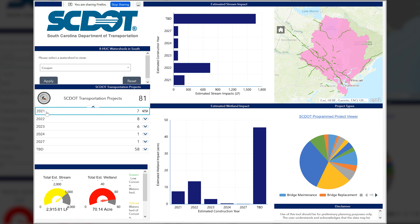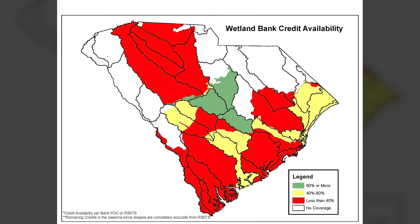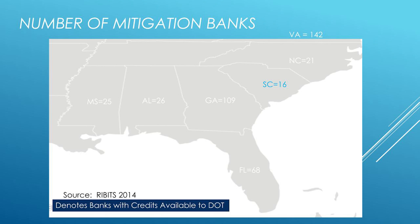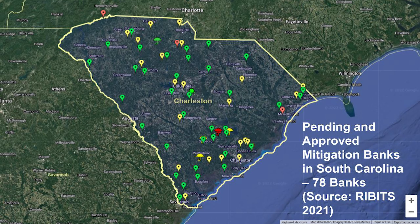Additionally, the MFT has decreased mitigation risk for SCDOT project delivery and increased the number of available banks in South Carolina from 16 in 2014 to 78 banks.